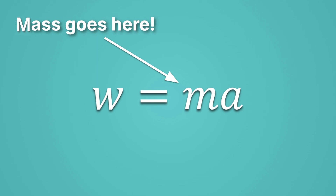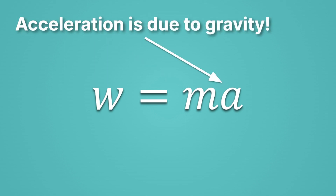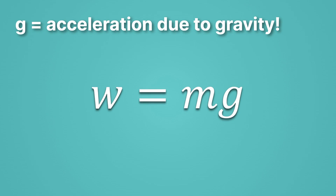When we are solving for weight, that acceleration is the acceleration due to gravity — that's specifically what weight means, it's the force due to gravity. So we substitute that A for a g, where little g means the acceleration due to gravity. Now we'll use weight equals mass times gravity to solve a number of problems.